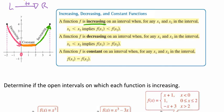A function is increasing on an interval when for any x1 and x2 in the interval, x1 is smaller than x2. So notice here that 2, which was our x1, is smaller than 4, which is our x2. Therefore, our function is increasing.